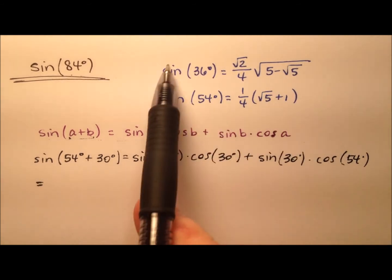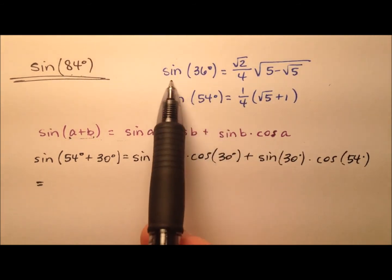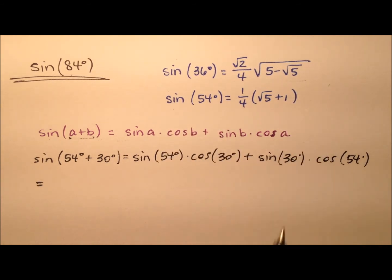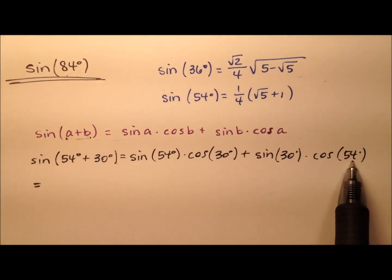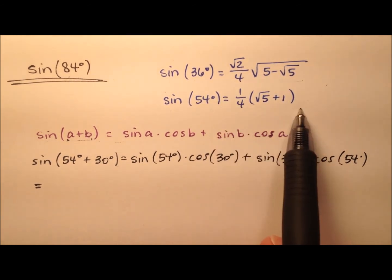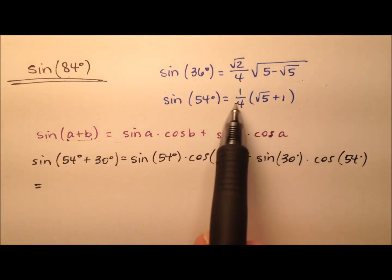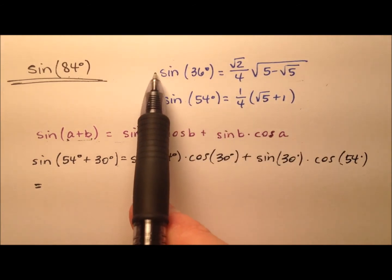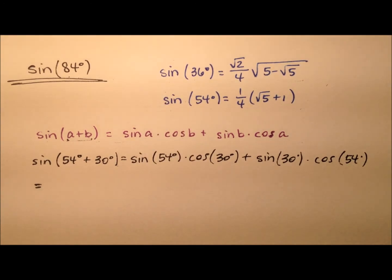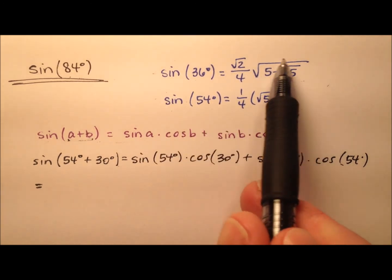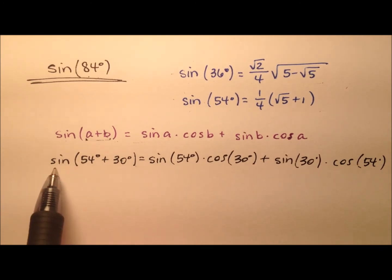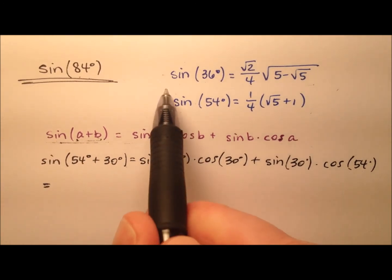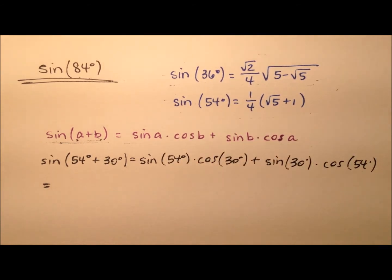Up here at the top, I've included two values of sine: sine of 36 degrees and the sine of 54 degrees. These are the two values we'll end up using in this expansion. We worked these values in previous videos — actually two videos, one for each — and we found these values from scratch using polynomial equations and their roots. You can find links to those videos in the description below.